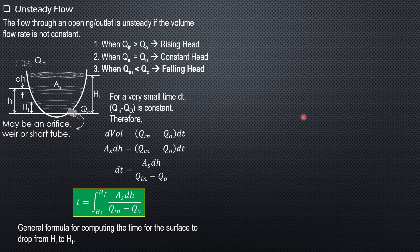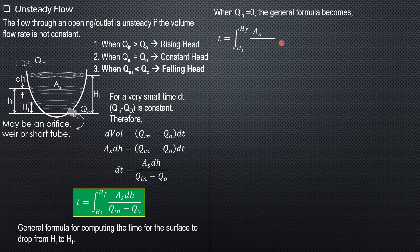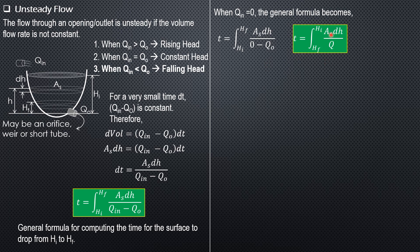In most cases we have the falling head case where Q_in equals zero. The general formula then becomes time equals the integral from H_i to H_f of area S dH over (0 minus Q_out). Since this is negative, interchanging the limits makes it positive, so time equals the integral from H_f to H_i of area S dH over Q_out.